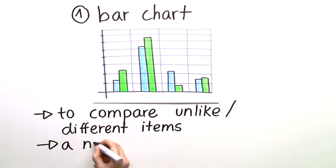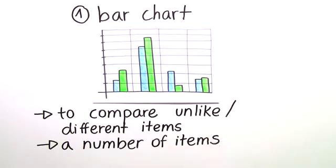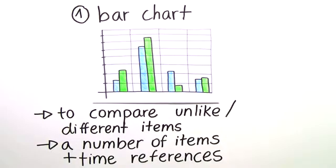Typically you have a number of items, for example fruits, and you have also two or more time references, for example two different months or years.